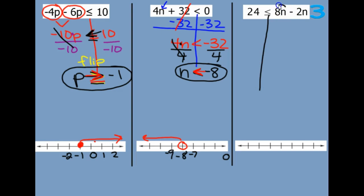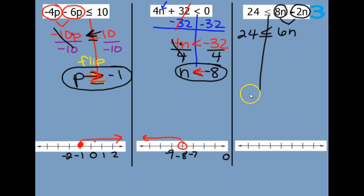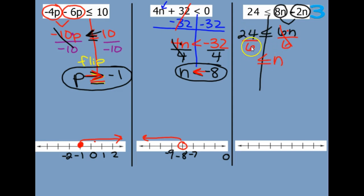On this next one, we have an 8n and a negative 2n — so we can just combine those together. 8 minus 2 is 6n. Then the opposite of multiplying by 6 is dividing by 6. Those go away — we have n and our symbol. And then 6 times what is 24? 6 times 4 is 24.